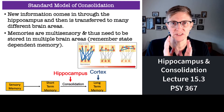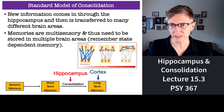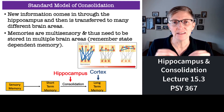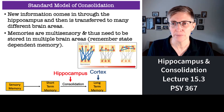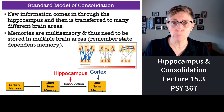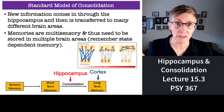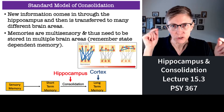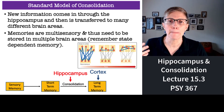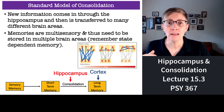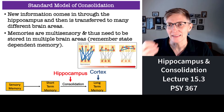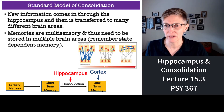According to the standard model of consolidation, new information comes into your hippocampus and then is transferred to your different cortical areas. Memories are multi-sensory and multi-modal — think of state-dependent memory. They need to be connected to each other within the cortex. For example, the smell of pumpkin pie can jar memories of holidays with family — that's the interconnectedness between cortical areas.